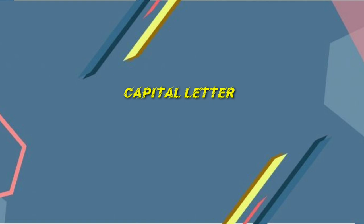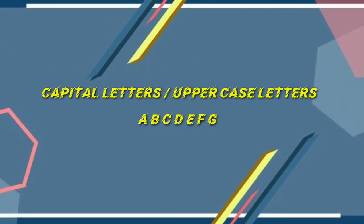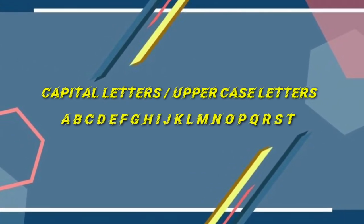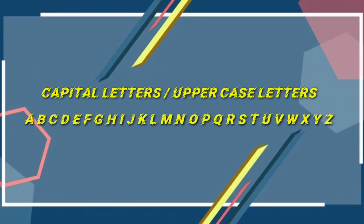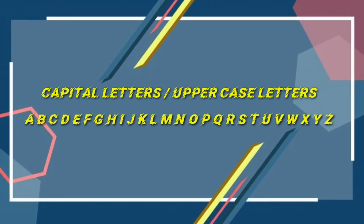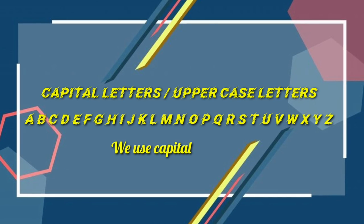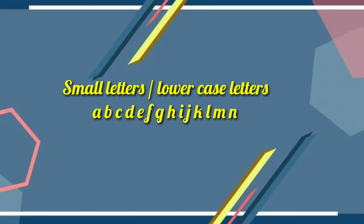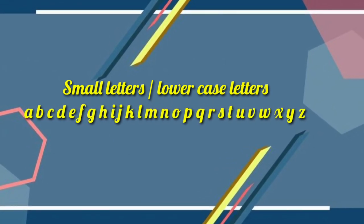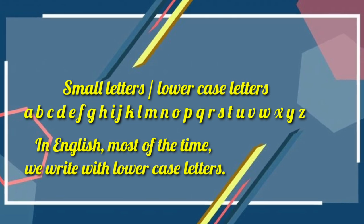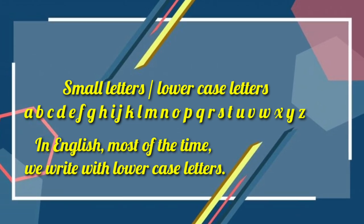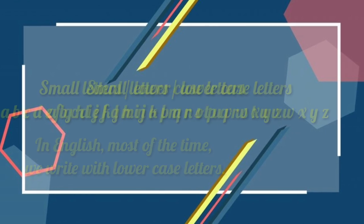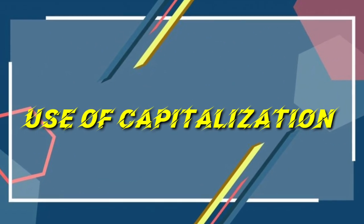Capital letters are also called uppercase letters. A to Z alphabets are 26 letters. These are the large letters compared to the small letters. We use capital letters for specific situations. Small letters are called lowercase letters. In English, most of the time we write with lowercase letters. In this grammar, we will learn the rules for when to use capital letters.